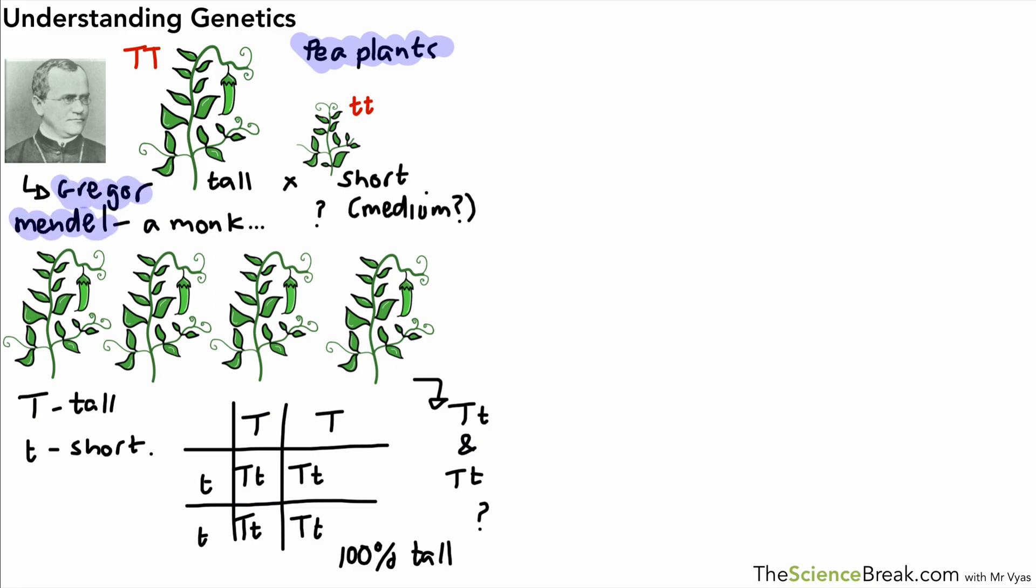So, Gregor Mendel did a lot of work on genetics and inheritance of pea plants, although he didn't know he was doing genetics. But what he concluded was that there were what he called units of inheritance, units of inheritance passed on to the offspring that we now know are called genes. So there were units he called them units of inheritance, we know those as genes.